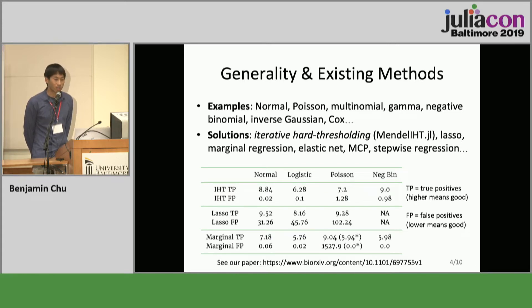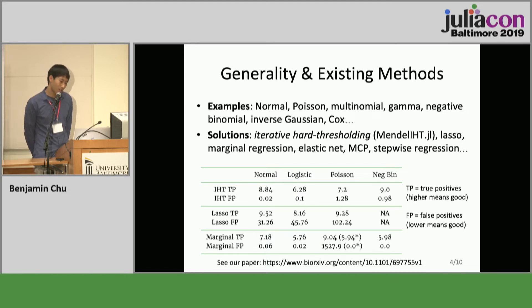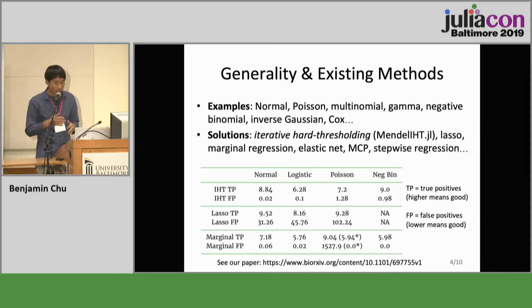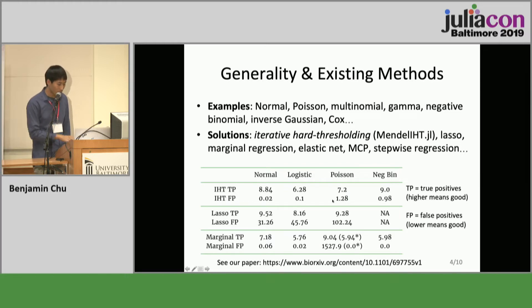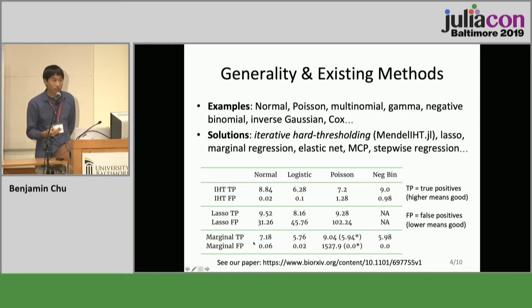There are a lot of different methods that solve this. In statistics, people like to do lasso or elastic net. In genetics, people like to do marginal tests — essentially a consecutive series of univariate linear regressions. In this table I'm trying to show that IHT is indeed better than both. For lasso, there are way too many false positives, which we can't really deal with in genetics because these tests are expensive. For univariate tests, the true positive rate is just not high enough.